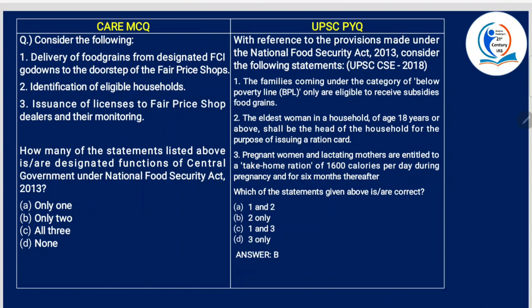Consider the following: how many of the statements are designated functions of the central government under the National Food Security Act of 2013? Delivery of food grains from designated FCI godowns to the doorstep of fair price shops — yes, this is the central government's job. Identification of eligible households — No. Identification of beneficiaries or eligible households is the function of state governments or UTs under this act.